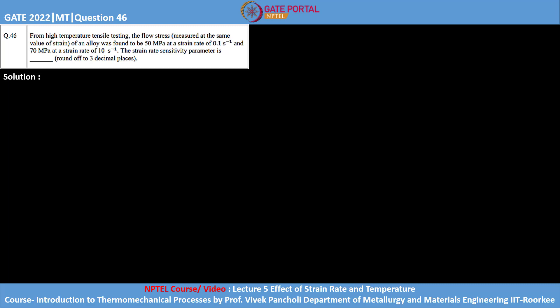This is question number 46 of GATE 2022 metallurgical engineering. The question says from high temperature tensile testing, the flow stress of an alloy was found to be 50 MPa at a strain rate of 0.1 per second and 70 MPa at a strain rate of 10 per second. Find the strain rate sensitivity parameter.